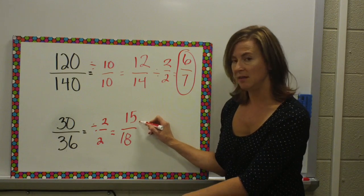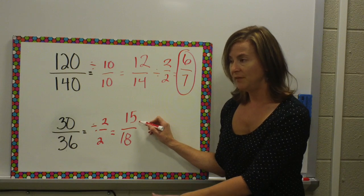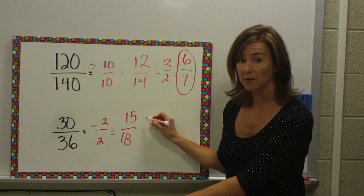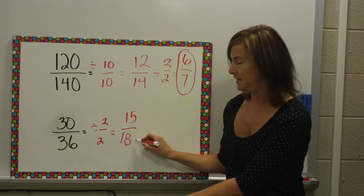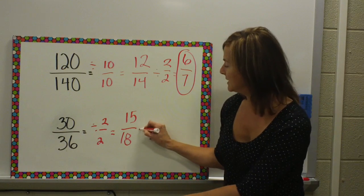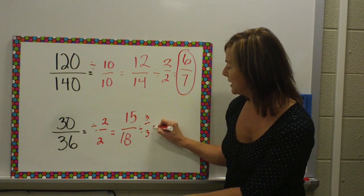So, if I look at 15 and I think 3, 15 divided by 3. 3 times 5 is 15, so 3 would work for 15. 18. I know that 3 times 6 would work for 18. So, I can divide both of these by 3.